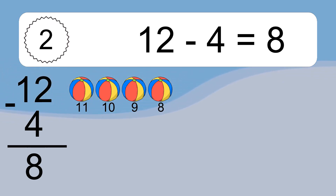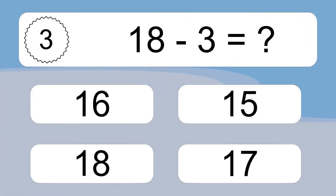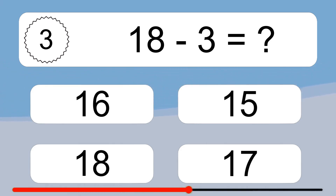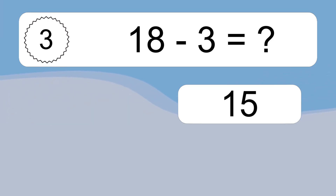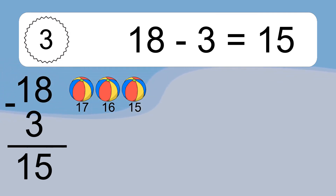18 minus 3 equals what? 18 minus 3 equals 15. Let's count it. 17, 16, 15.